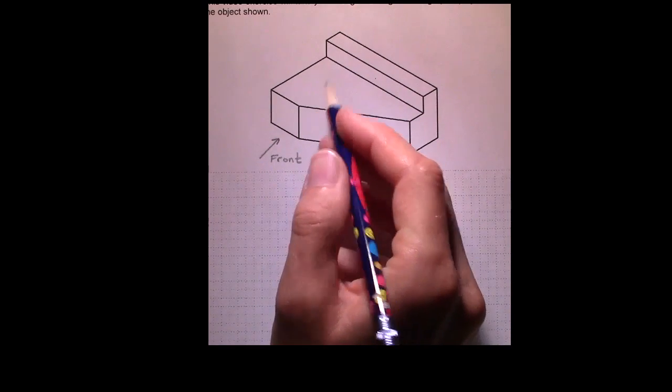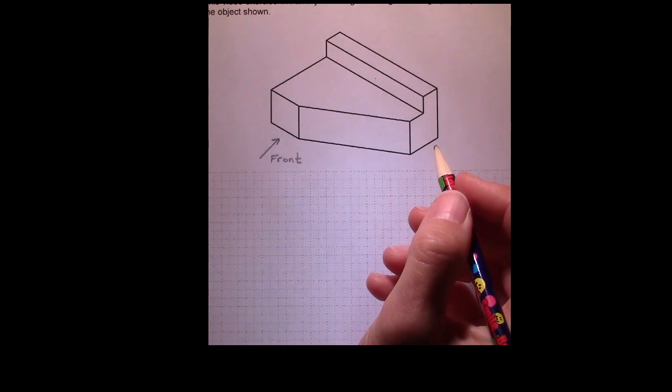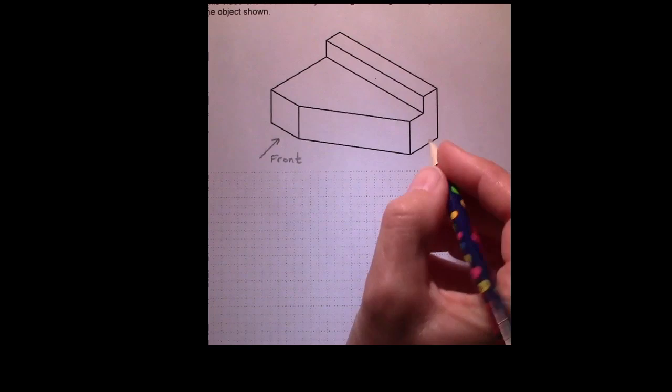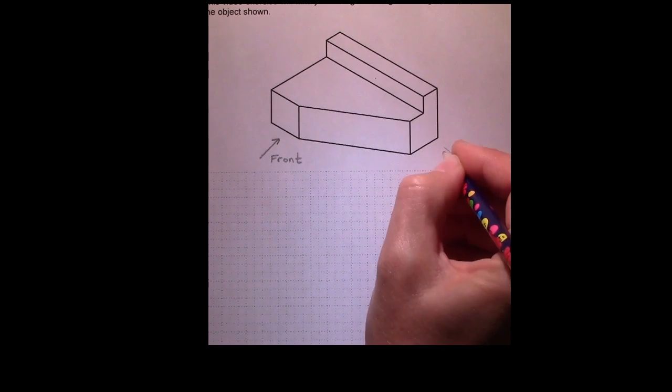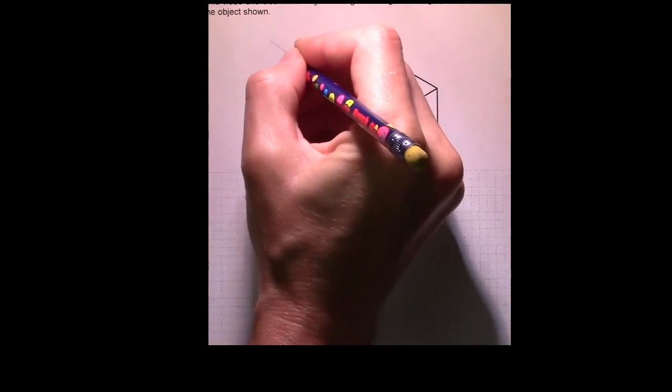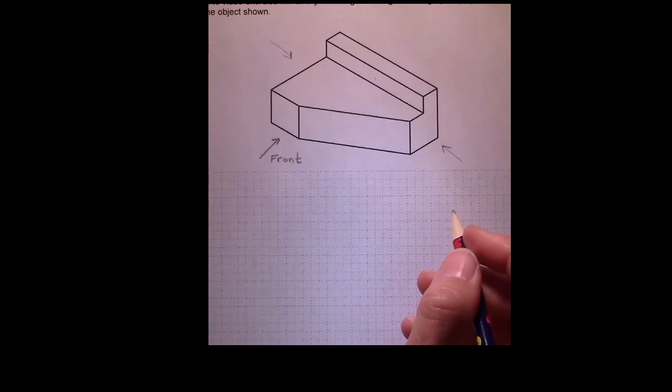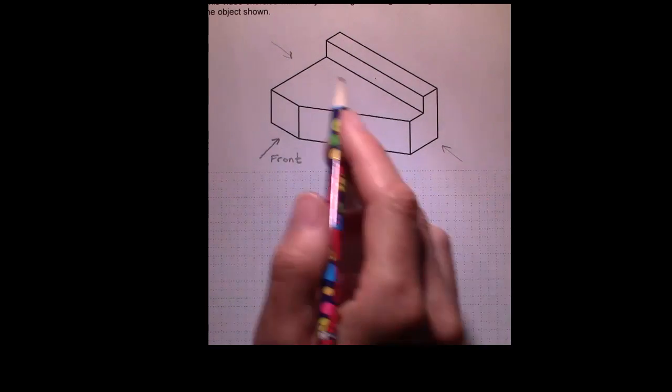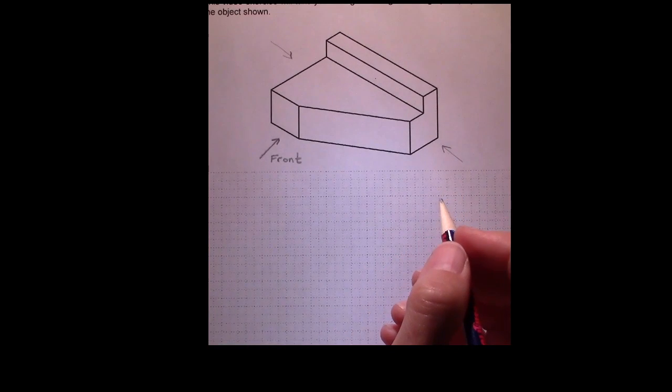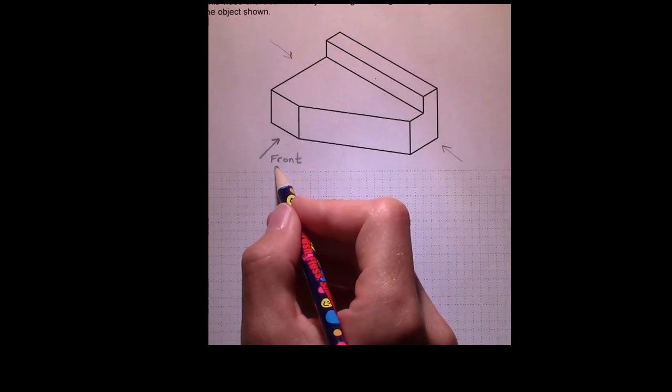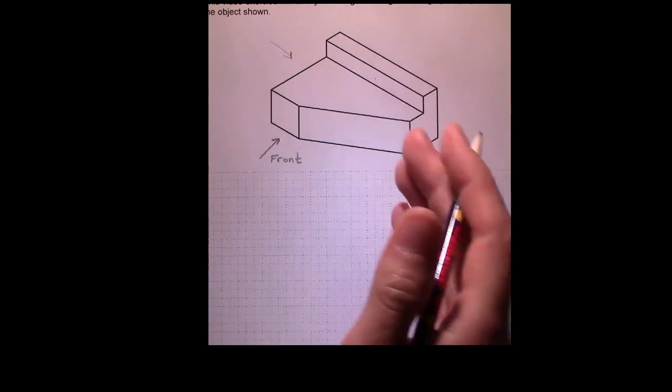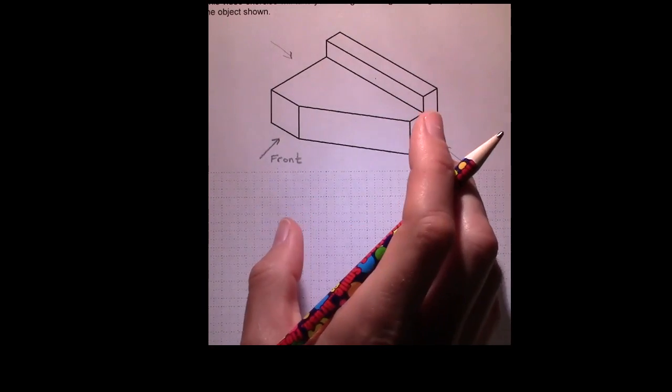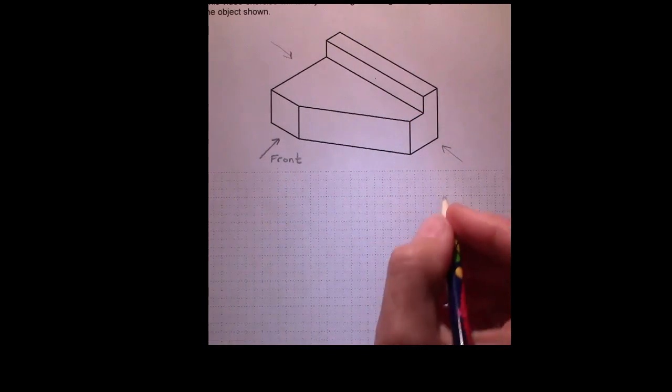So in reality, we should either choose this side or this to be our front view. However, we're just learning how to do orthographic projections and to choose either one of these views would be a little confusing. So I'm going to stick with the front view that's sort of shown in the figure. But just keep in mind, this is not really the best front view.